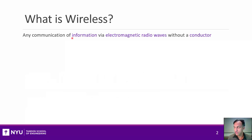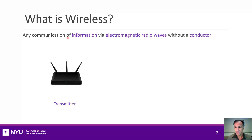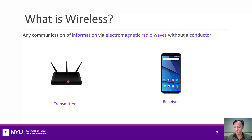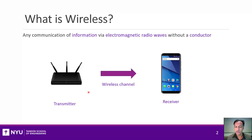So what is wireless communication? Wireless communications is the communication of information via radio waves without a conductor — meaning without a wire. Most wireless systems have at least three components: a transmitter, which is the source of information (say, a wireless access point); a receiver, which receives that information (say, your smartphone); and the wireless channel, simply a channel without a wire, like air.